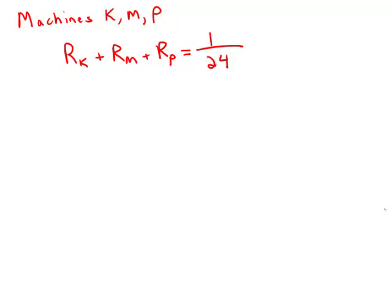The question is: how long does it take machine K working alone at its constant rate to complete the task? If we can figure out the rate of K, we'd be able to answer that question.